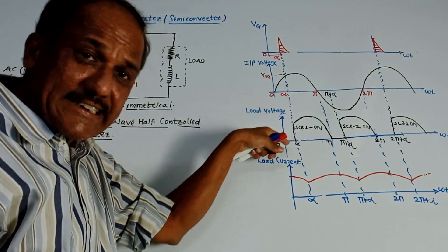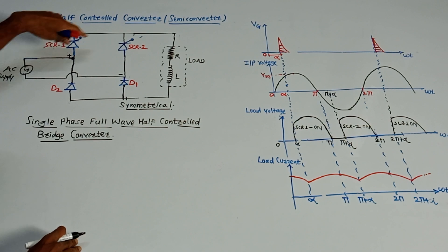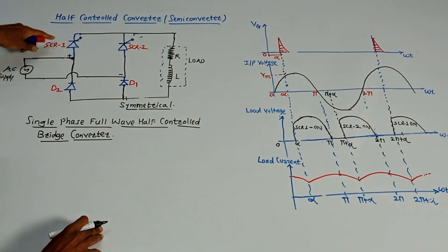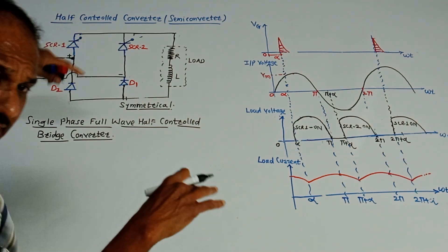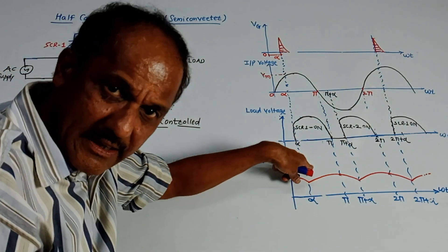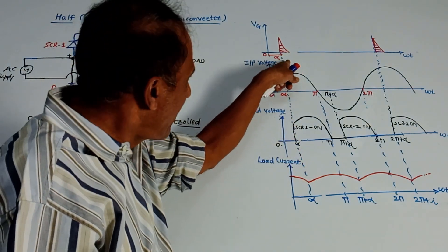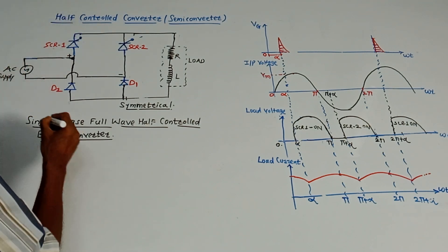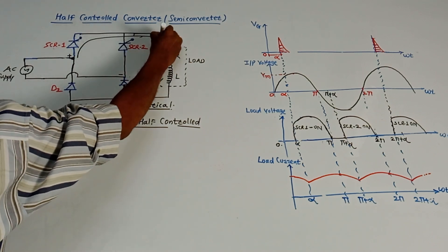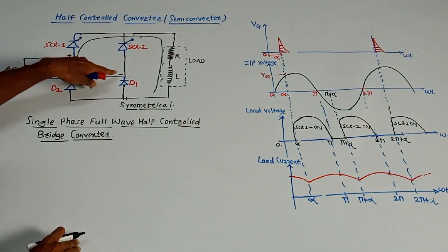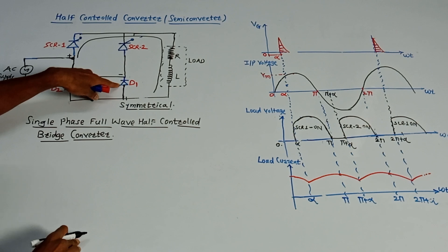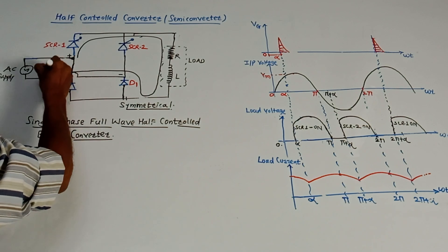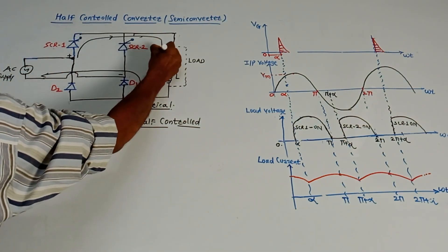Next is the diagram for load voltage. During the positive half cycle, this terminal is plus and this terminal is minus. Due to this positive terminal, SCR1 will start conducting. SCR1 will be in forward blocking mode from 0 to alpha. At alpha, we apply a gate pulse, after which SCR1 starts conducting. Current flows through SCR1, then through load RL. D2 is connected to the positive terminal, so D2 cannot conduct, but current will flow through D1. This is the flow of current during the positive half cycle.